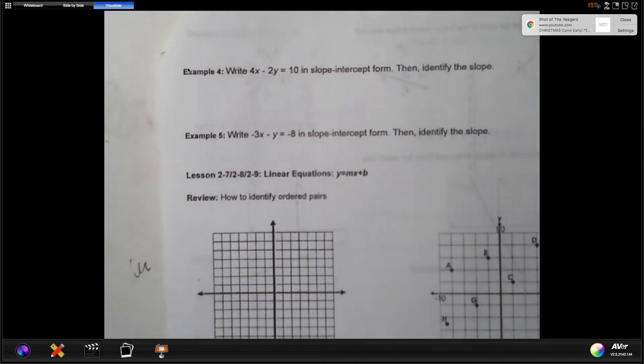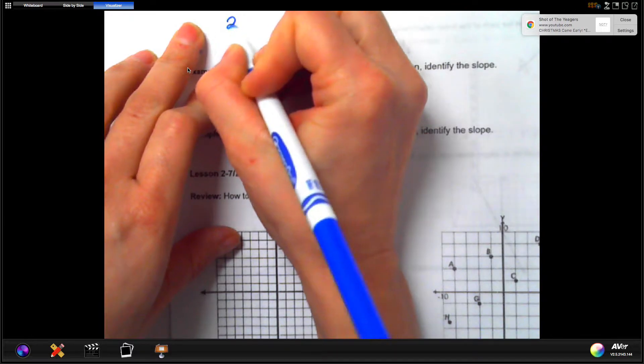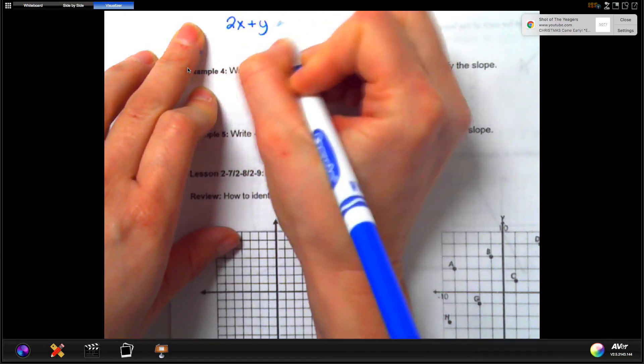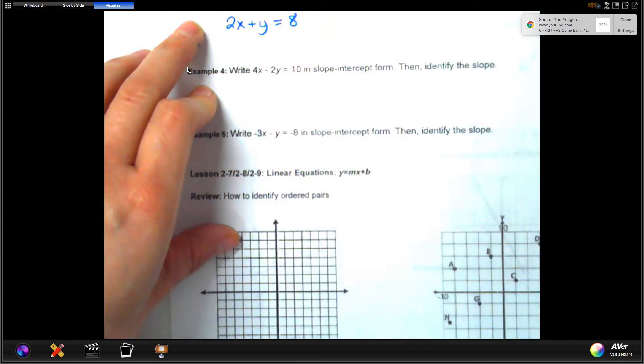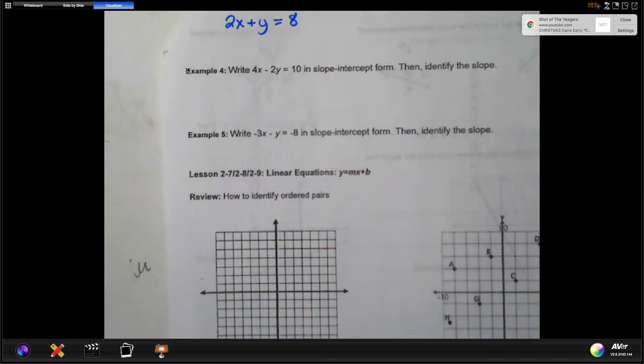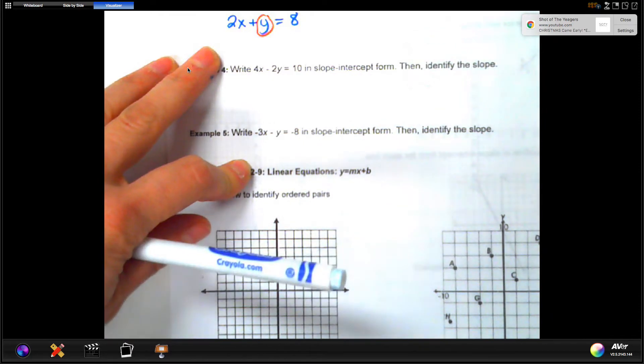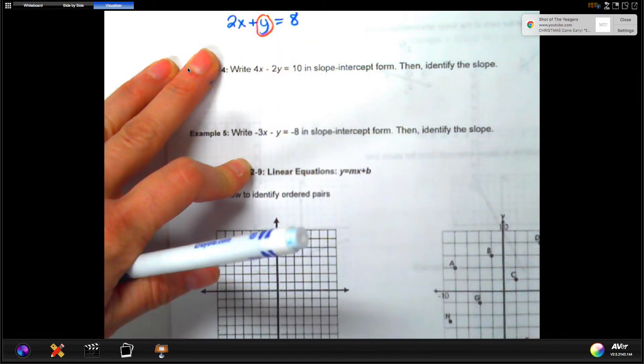So in order to do this, I'm going to rewrite it so that I can rearrange some things. So, 2x plus y equal 8. The one that we want to be by itself on one side of the equal sign, always for this, is going to be y. So, this one right here, we need it to be alone on this left side.